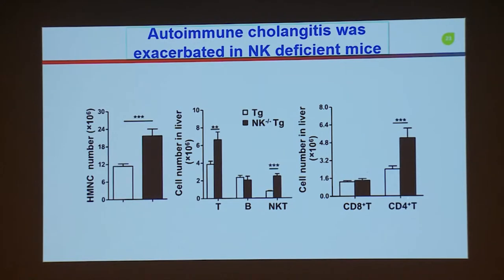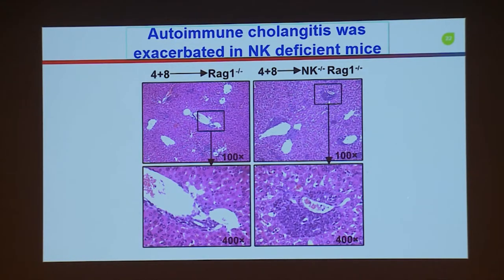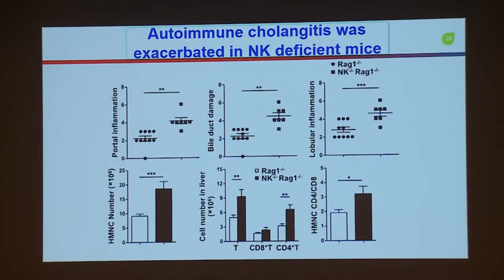In detailed analysis of the NK knockout, we found very clearly that in the liver only CD4 T cells increased, but not CD8 cells. To confirm our results in a more controlled way, we transferred CD4 and CD8 T cells into RAG1 or NK-deficient RAG1 mice. Results were very similar to the NK knockout animal model: we found much more high portal inflammation and bile duct damage, and CD4 T cells were much more increased in the liver. This confirms that liver NK cells may have some inhibitory function on this cell population.